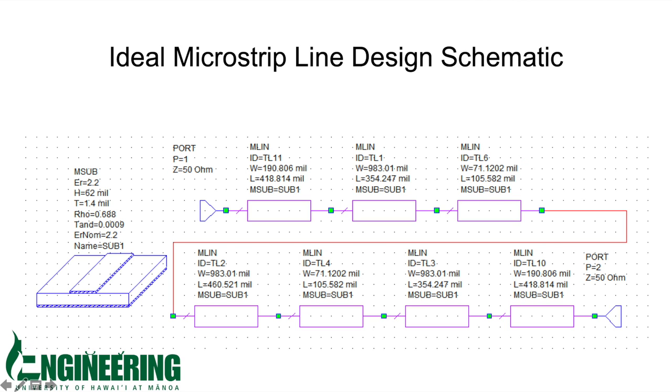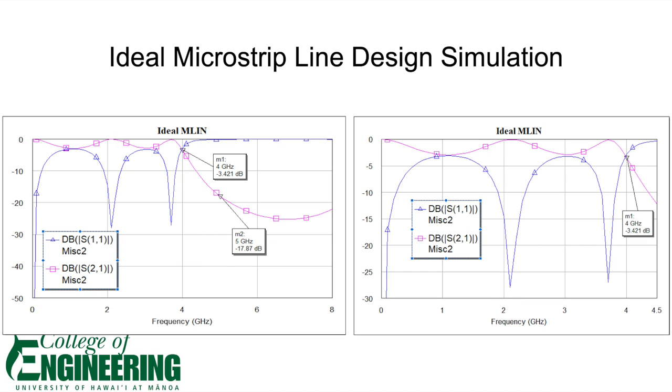We used the impedance, operating frequency, and electrical length values from the ideal T-line design and inputted them into the TX-line calculator on microwave office to obtain the values for the microstrip line design, and also identified the substrate as a 62mm duroid 5880. The simulation for the ideal microstrip design still held the cutoff frequency at 4 gigahertz and the attenuation at 5 gigahertz was similar to that of the ideal transmission line design.